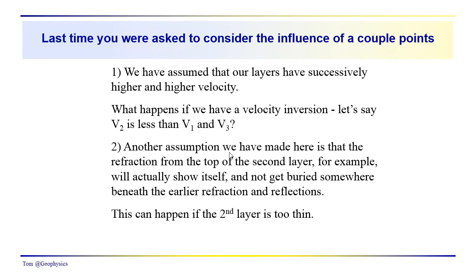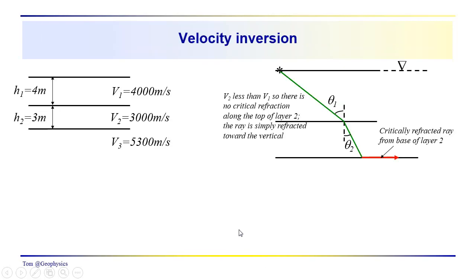And another assumption that we make is that the refraction from the top of the layer, that we're actually going to see it. And this may not be the case if the layer that's sandwiched between two layers, even though the velocity is increasing, if that layer is just too thin. So we don't see it. So this is referred to as the layer too thin problem. So we have the velocity inversion problem here, we have the layer too thin problem, and let's take a look at the velocity inversion problem first.